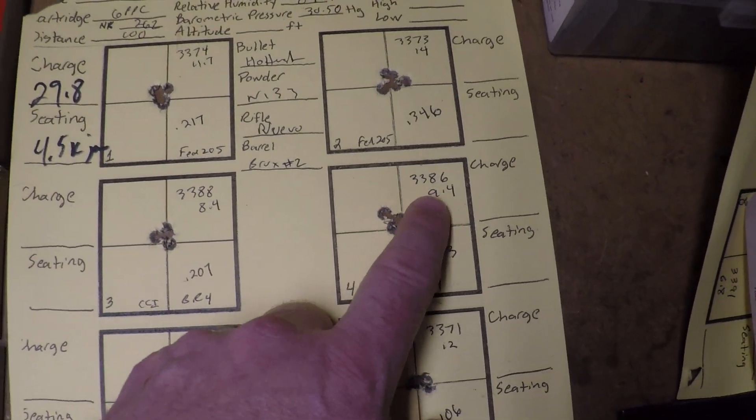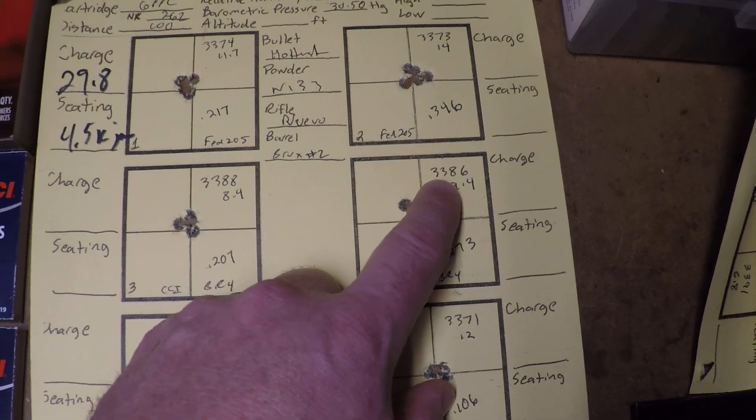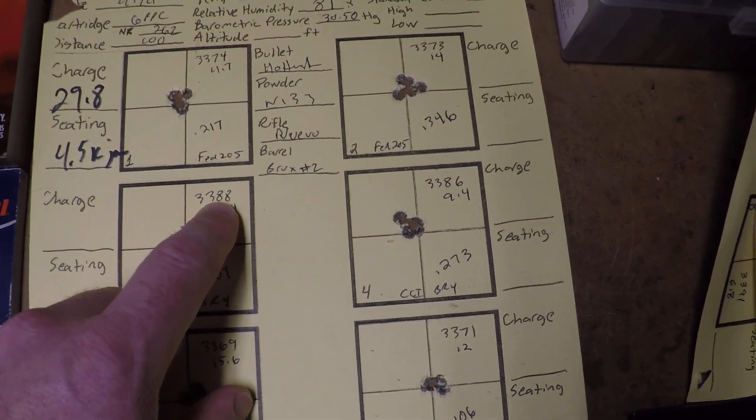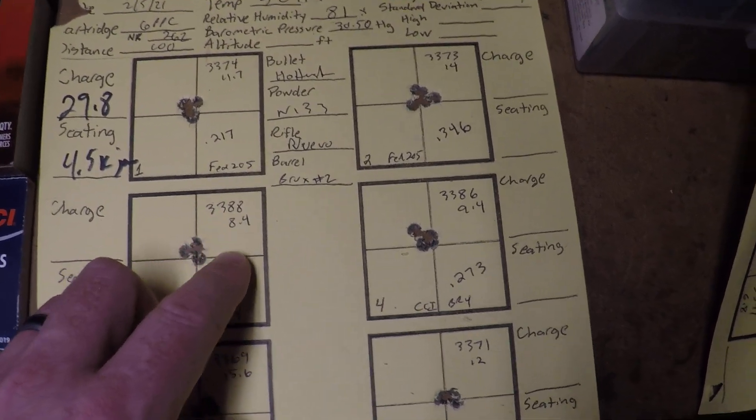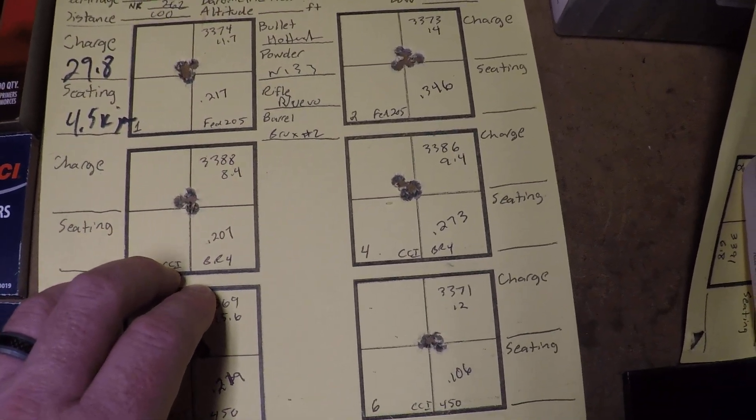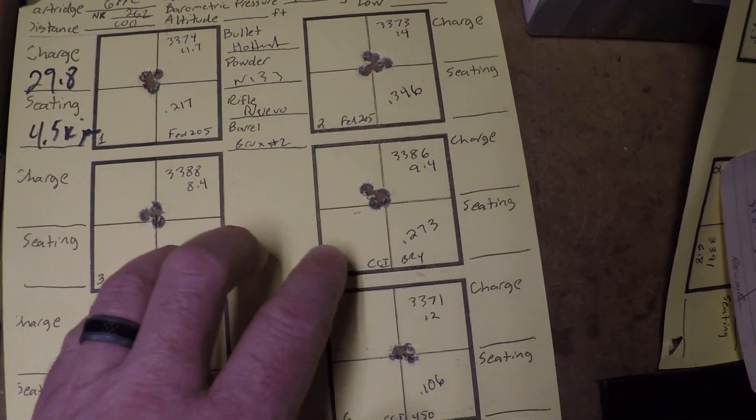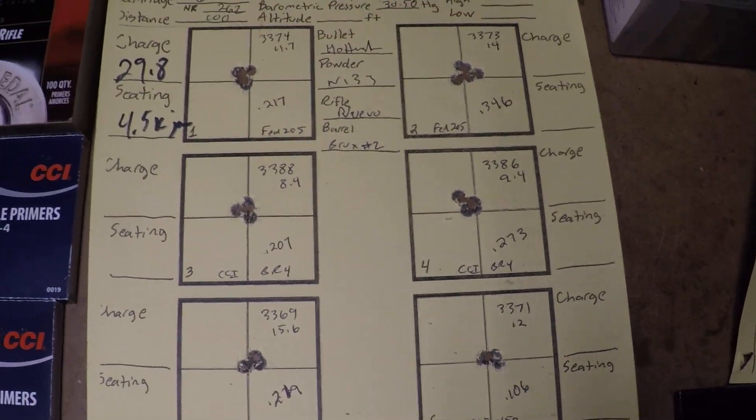For the BR4, we saw 3388, 3386, so very consistent, yet seems to be a little bit higher, about 12 feet per second, maybe 14 feet per second higher with the BR4s.